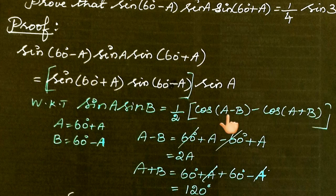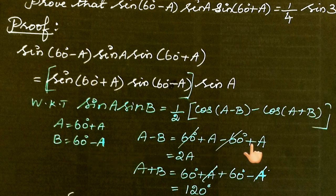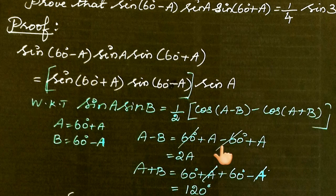Minus 60 times minus becomes plus, so 60 minus 60 gets cancelled, giving us A+A = 2A. So A-B = 2A.